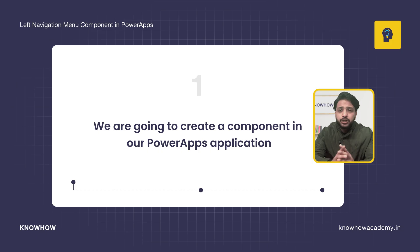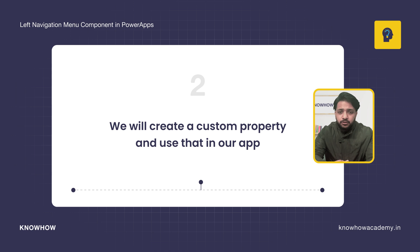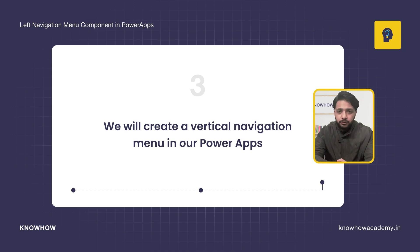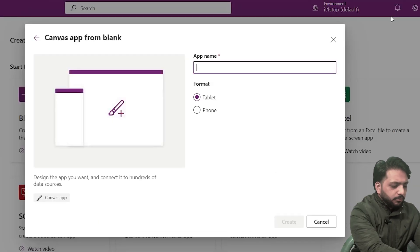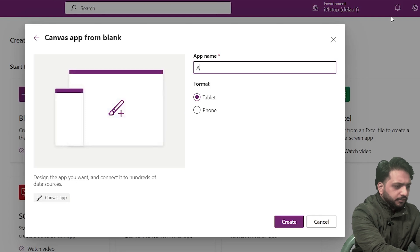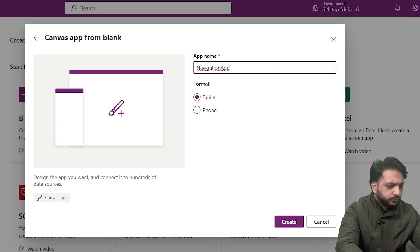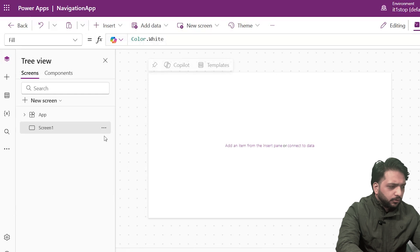Before moving further, let me tell you what we are going to do in this video. We are going to create a component in our Power Apps application, then we will create a custom property and use that in our app, and we will create a vertical navigation menu in Power Apps. First, on create, I will create a blank application and name it 'navigation app'.